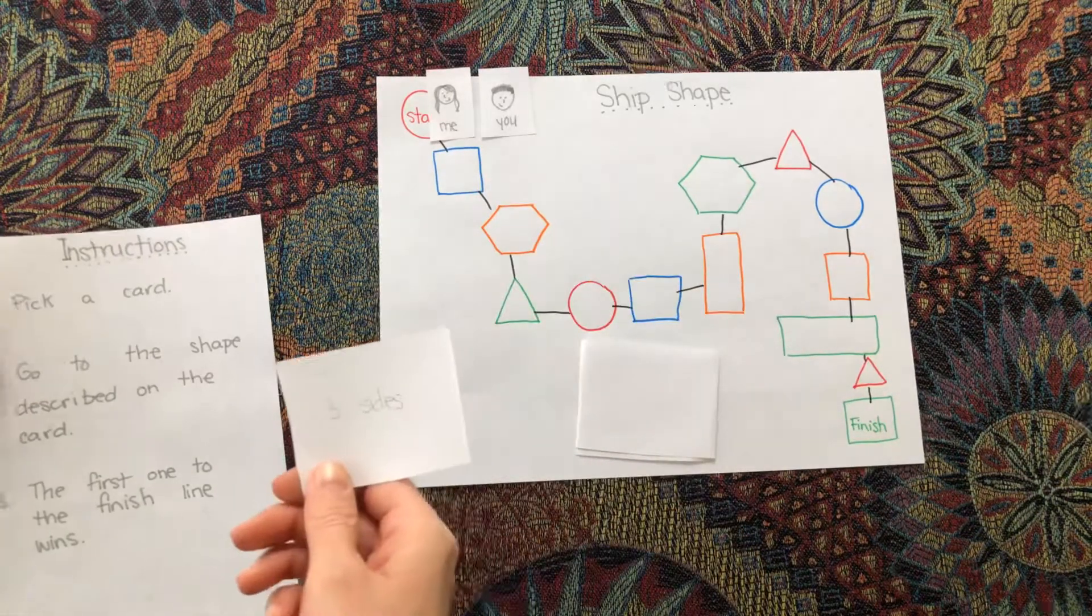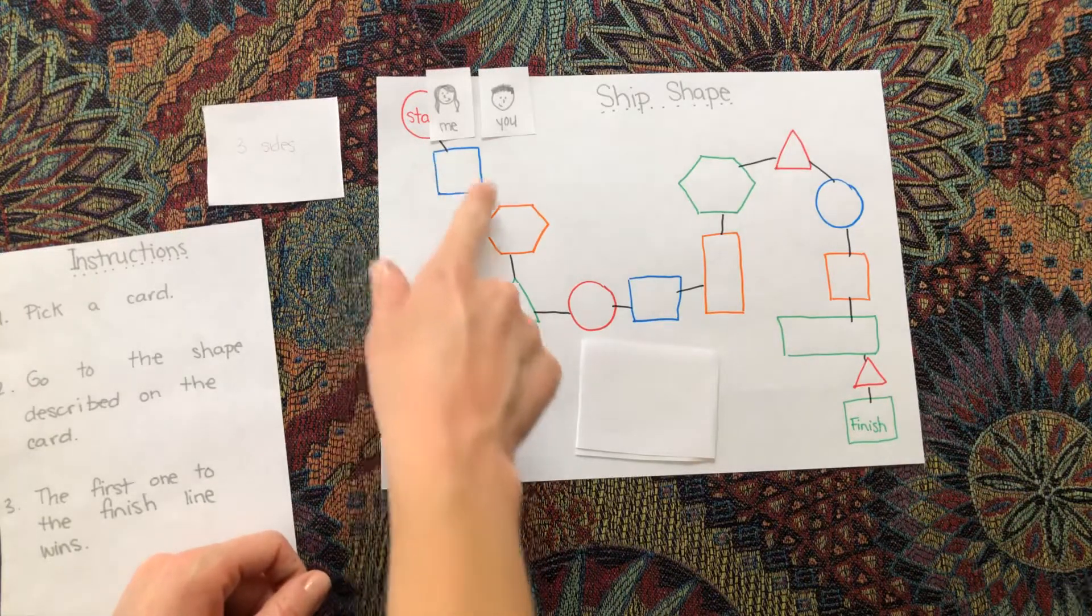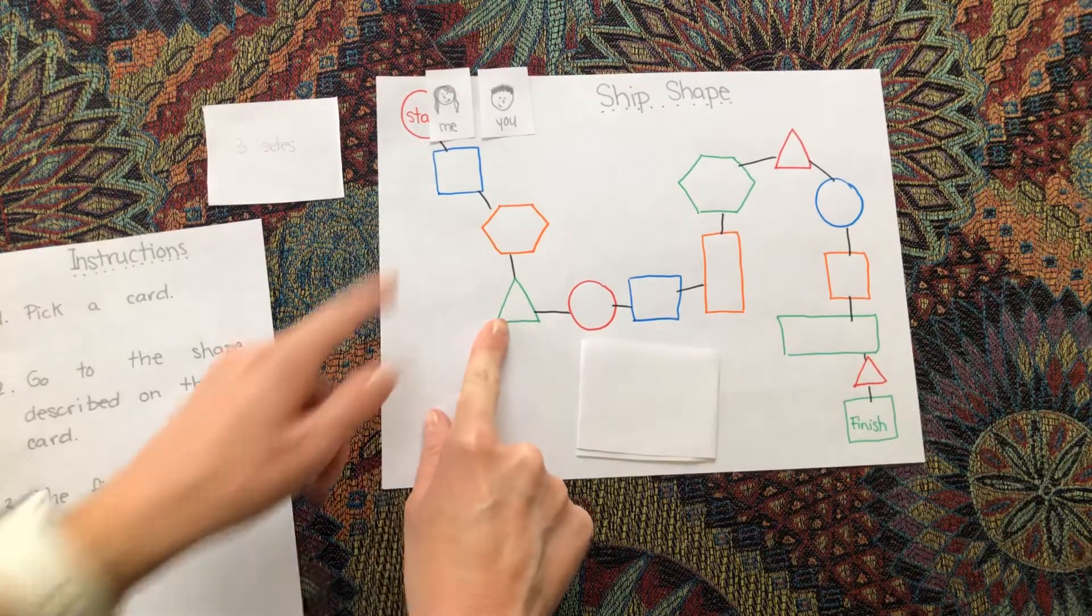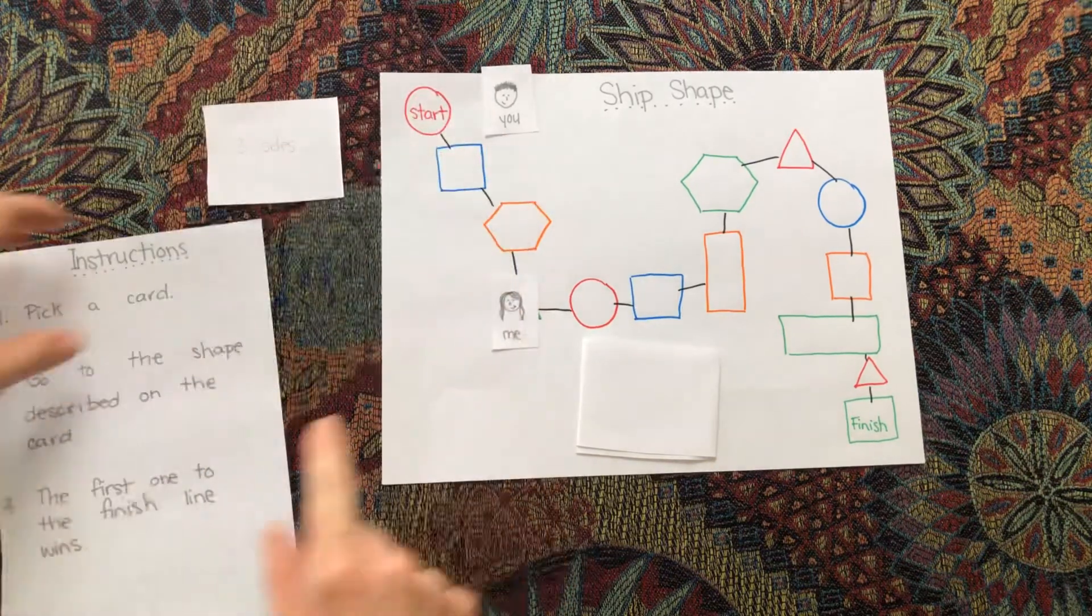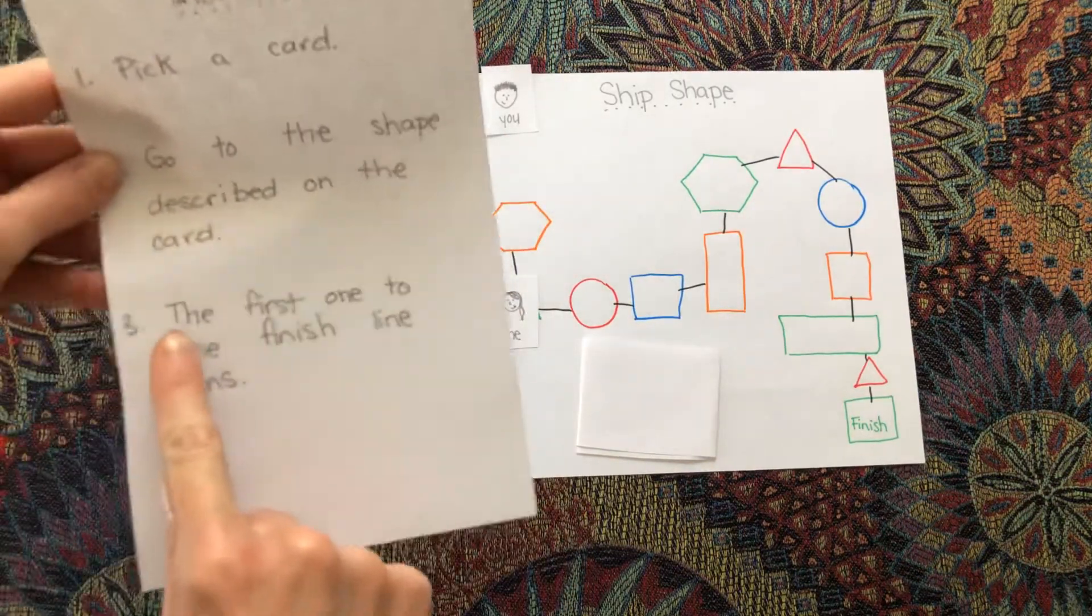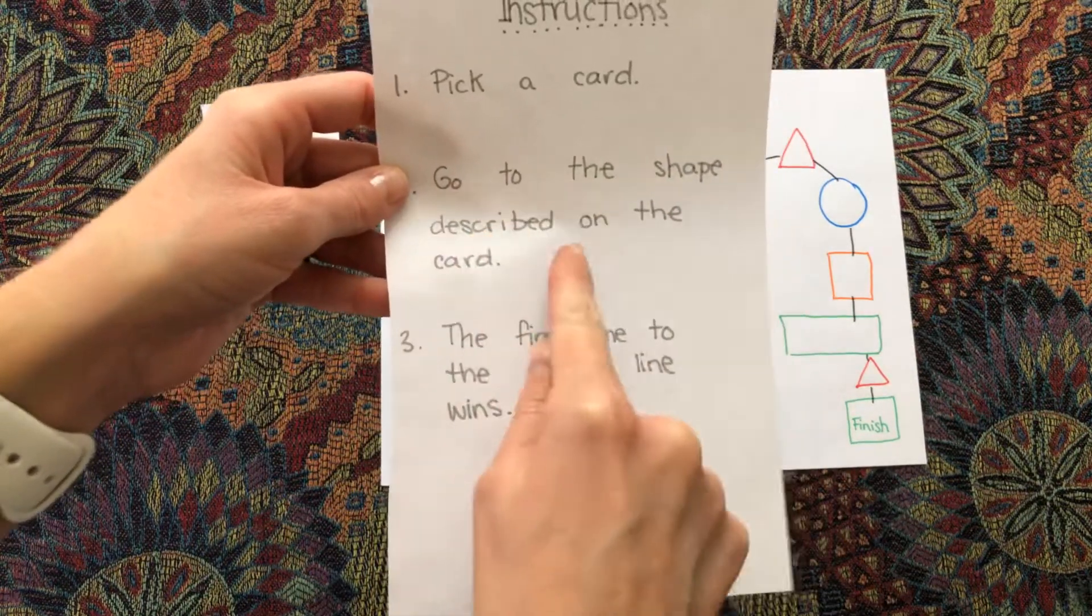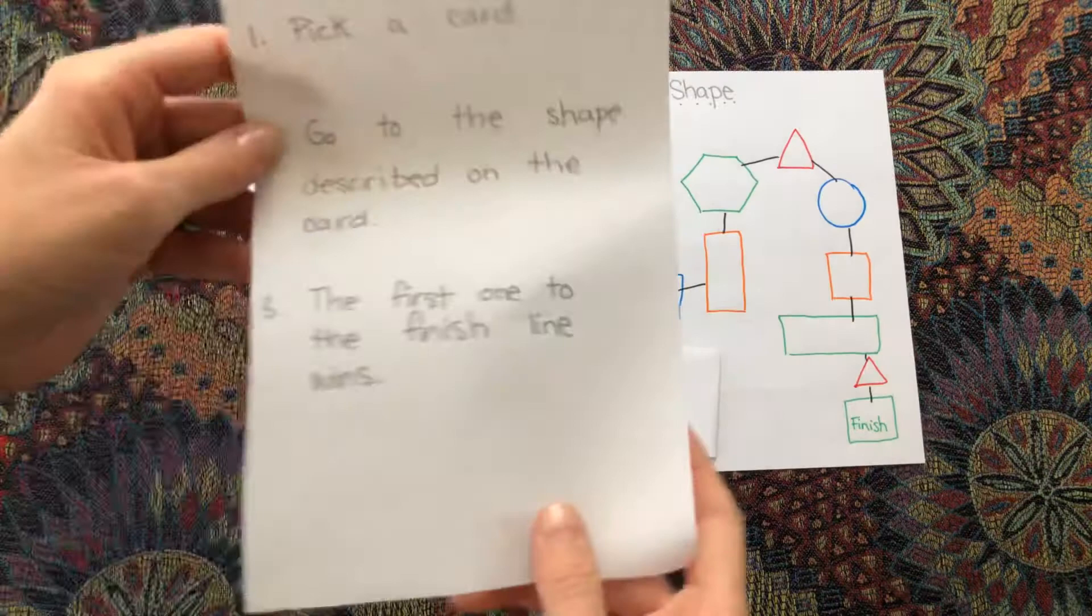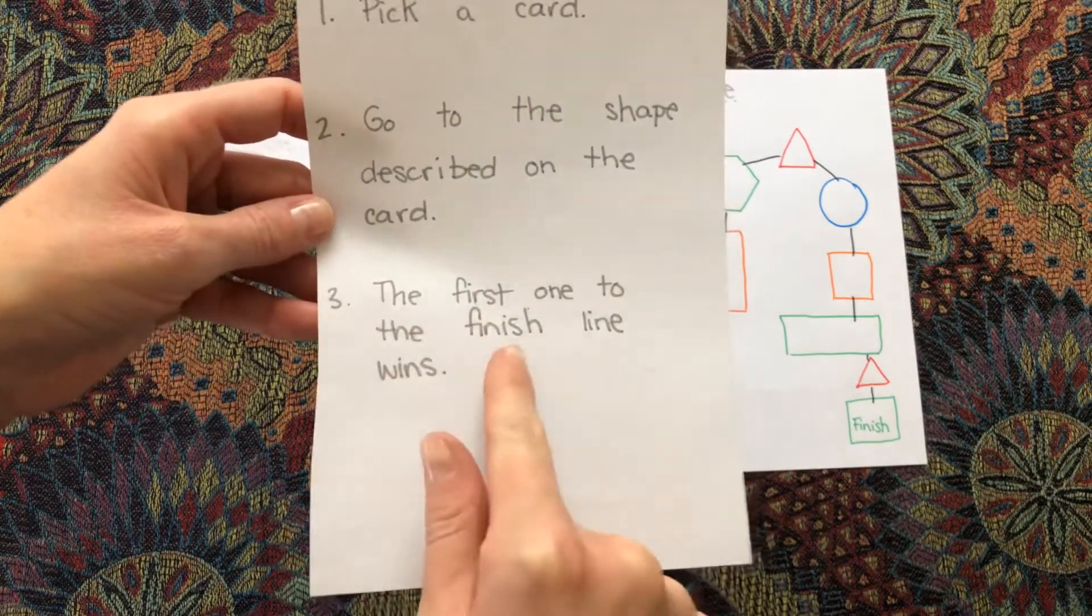My card says three sides. I need to move my person to a shape that has three sides. Which shape has three sides? Triangle. I need to go to the first shape that has that many sides. So I'm on the triangle. Go to the shape described on the card. So I did. I went to the shape that had three sides.